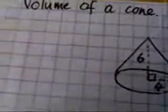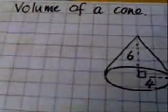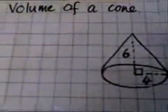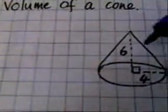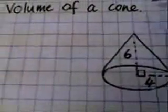Volume of a cone. Alright, so to begin with, if you know how to work out the volume of a cylinder, then working out the volume of a cone will become very easy. The volume of a cylinder is equal to pi r squared times the height.